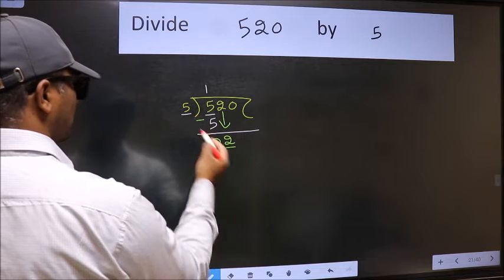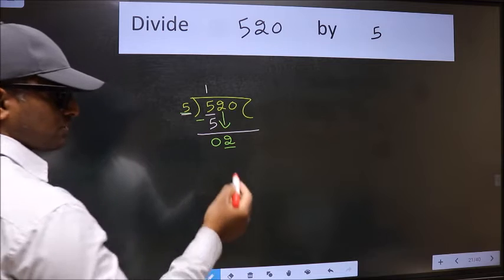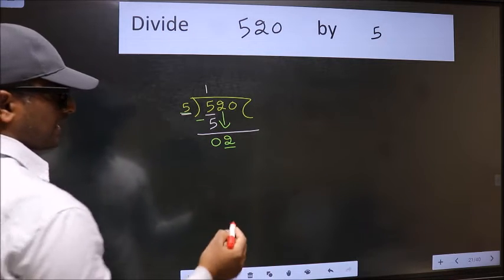Now here we have 2 and here 5. 2 is smaller than 5, so we should bring down the second number.